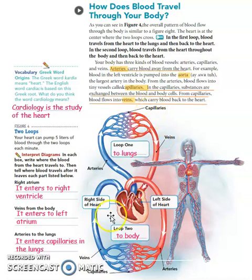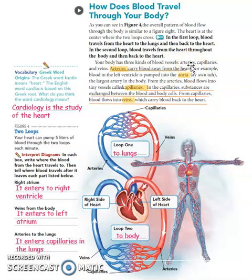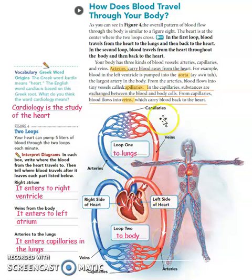One way goes to the lungs and the other way goes to the other body organs. In this loop, there are three kinds of blood vessels responsible for moving blood. The first is arteries. Arteries are responsible for taking blood away from the heart — you can see the arrow going out from the heart. That is the artery.